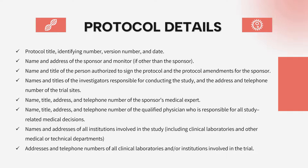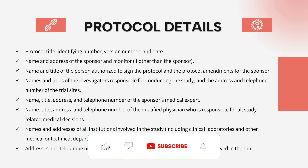The first portion is the protocol details. Whenever you see a protocol, it will clearly have a protocol title with a unique identification number, a version number, and a date — because the protocol gets updated and versioned up. It should also explain the name and address of the sponsor, and the monitor if required, the name and title of the person authorized to sign the protocol and protocol amendments from the sponsor's end, as well as the names, titles, addresses, and telephone numbers of the investigators responsible for conducting the study.